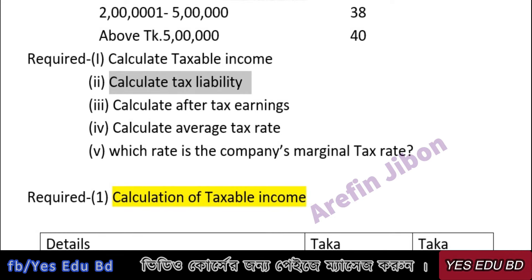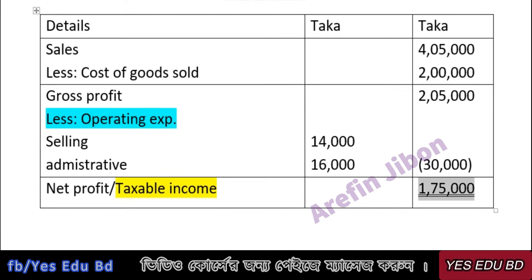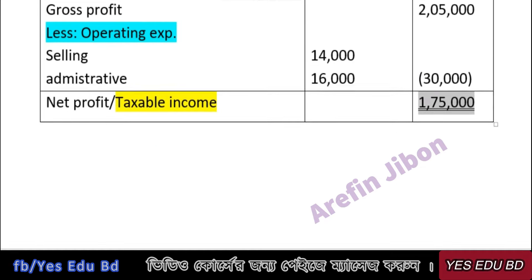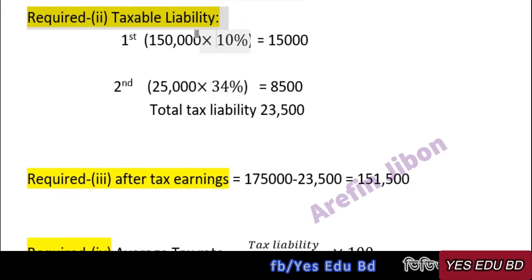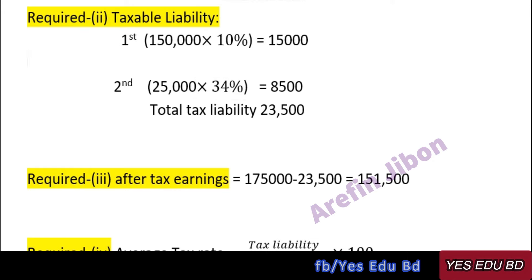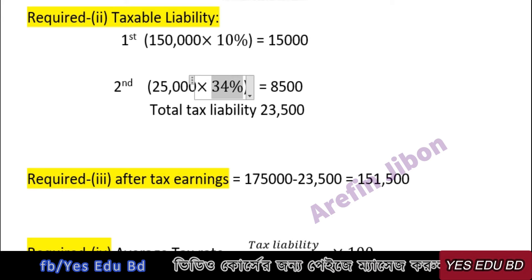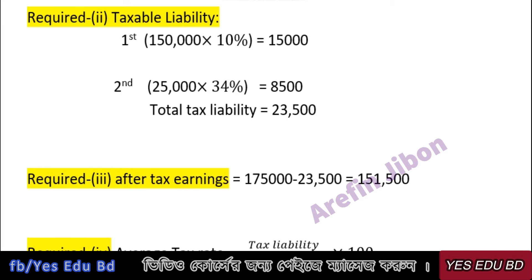Calculate tax liability. Our taxable income is 1,50,000. First step: on the first 1,50,000 at 10%, tax liability is 15,000. Second step: on the next 1,50,000 at 34%, tax liability is 33,000.